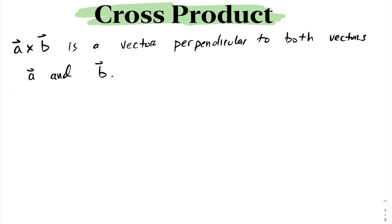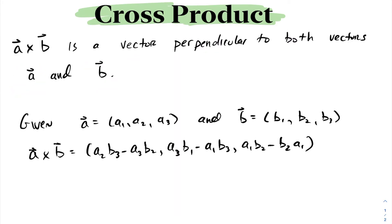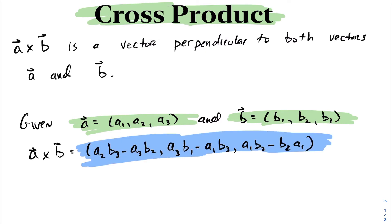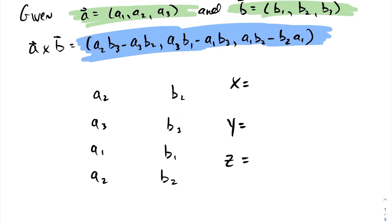We have a formula for the cross product in R3. Given a vector (a1, a2, a3) and a vector b = (b1, b2, b3), a cross b equals the following. This can be a challenging formula to remember, so here's a quick way to derive it. Start with vector a: write down the second coordinate, then the third coordinate, then the first coordinate, then back to the second coordinate.